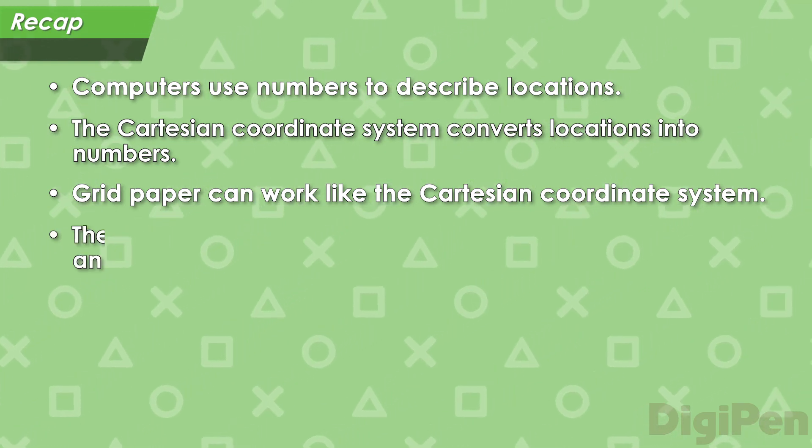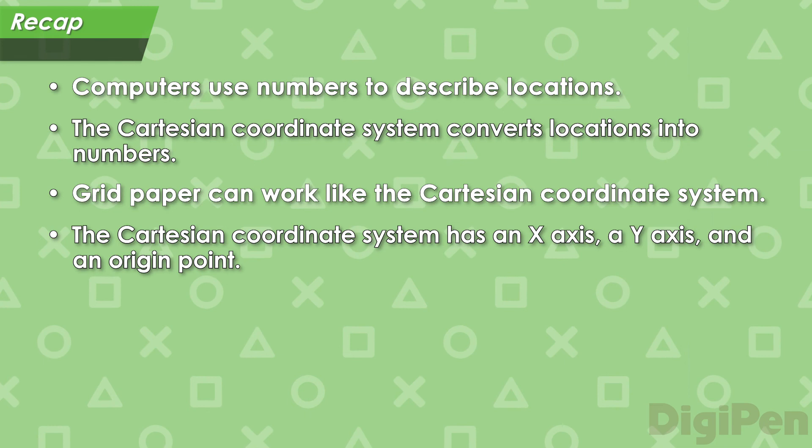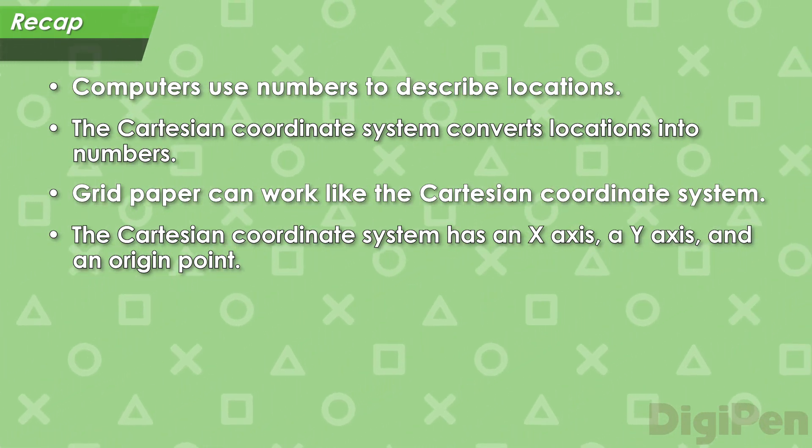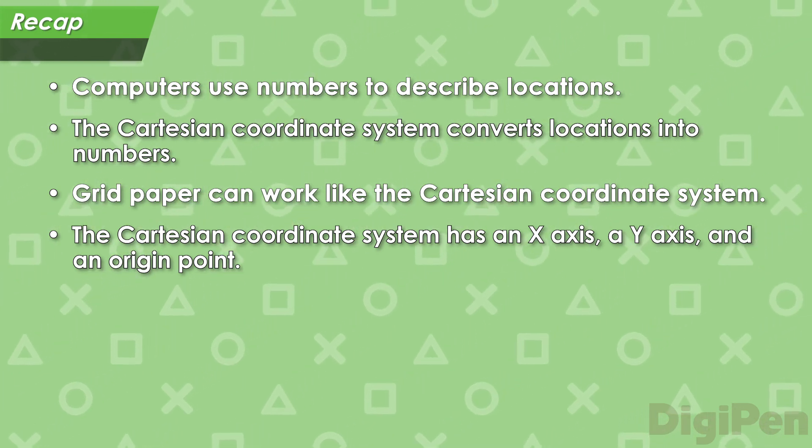Next, we learned about the parts of the Cartesian coordinate system, its horizontal x-axis, its vertical y-axis, and its origin point where they meet.